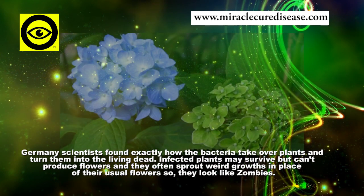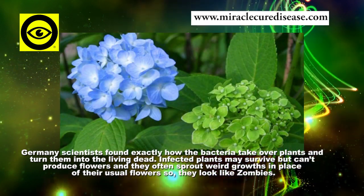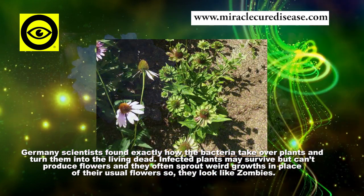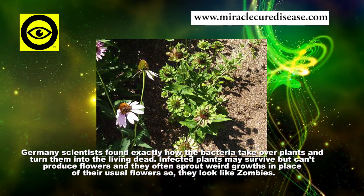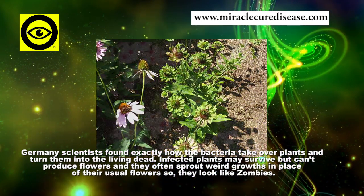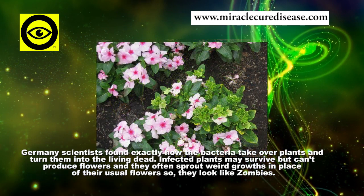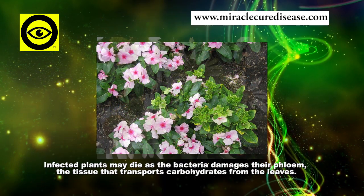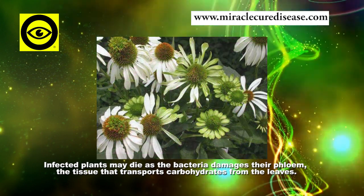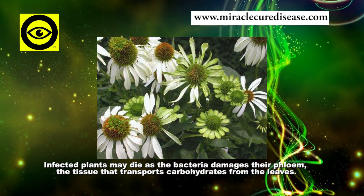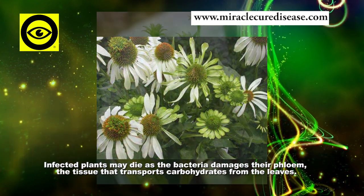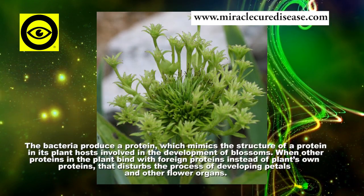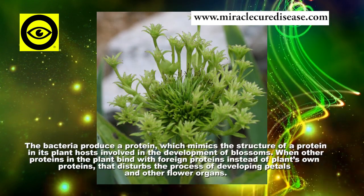German scientists found exactly how the bacteria take over plants and turn them into the living dead. Infected plants may survive but cannot produce flowers, and they often sprout weird growths in place of their usual flowers, making them look like zombies. Infected plants may also die as the bacteria damages their phloem — the tissue that transports carbohydrates from the leaves.